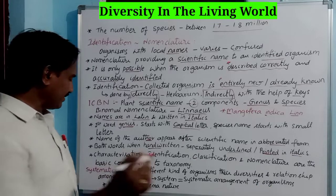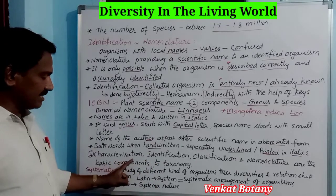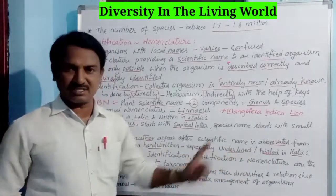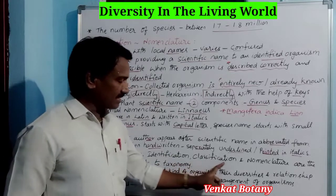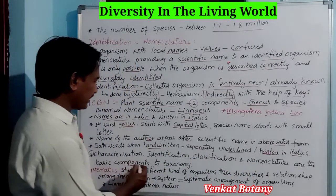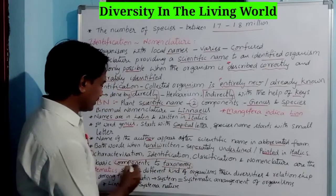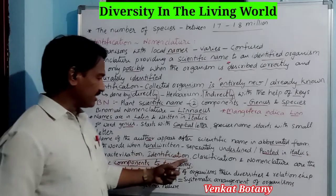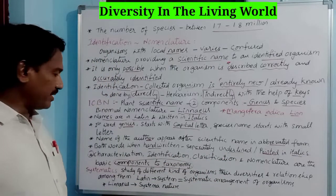One key point: characterization, identification, classification, and nomenclature are the basic components of taxonomy. What are the basic components of taxonomy? Characterization, identification, classification, and nomenclature — these are the basic components.